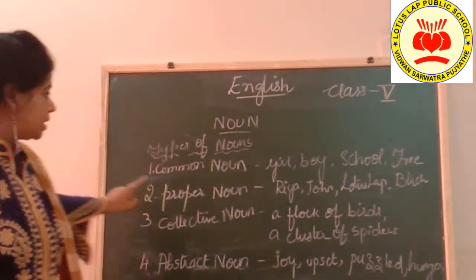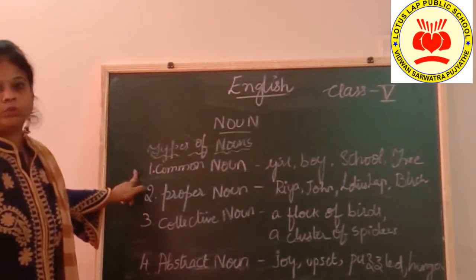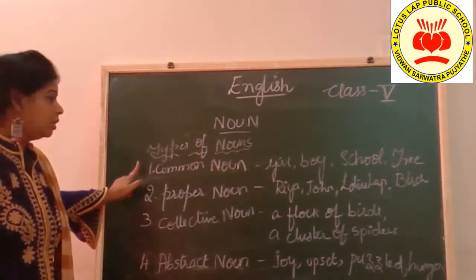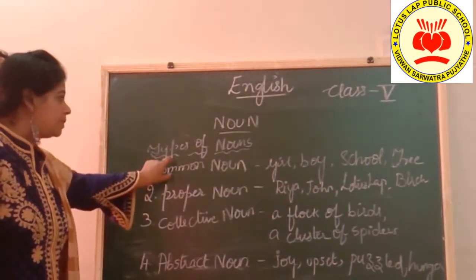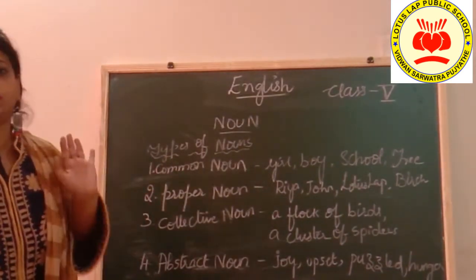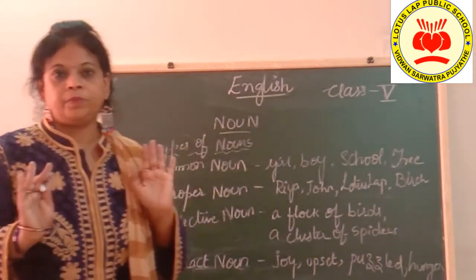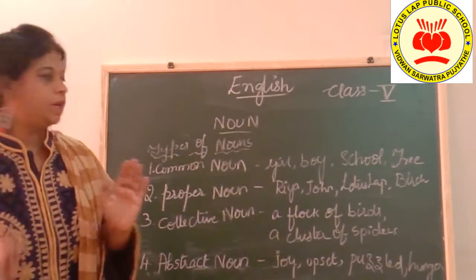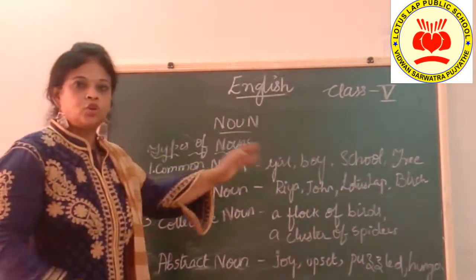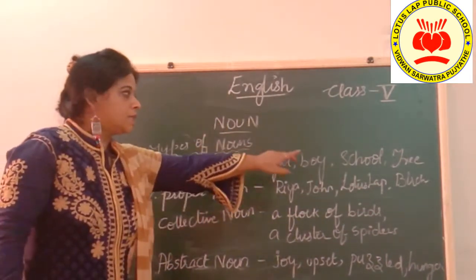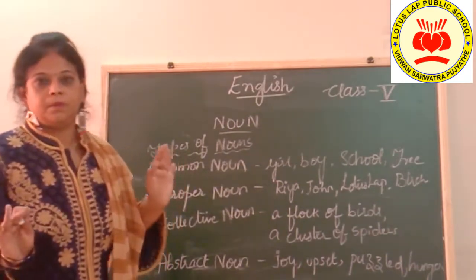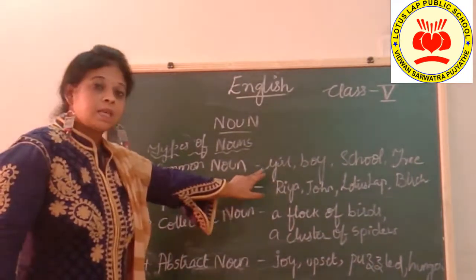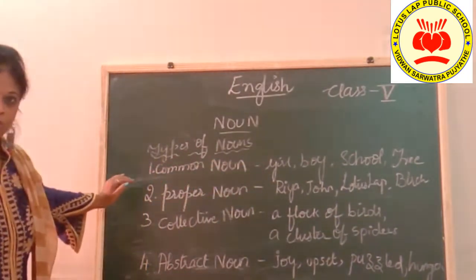First, let us go with the common noun. Some of you must be aware of it, but once again focus here. A common noun is a name given in common to a group — for example, girl, boy, school, tree. A common name is given to a group, and that is why we call it a common noun.